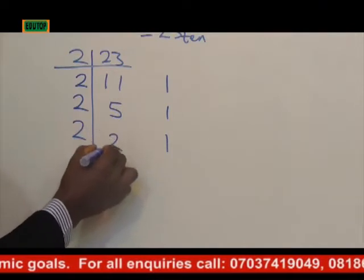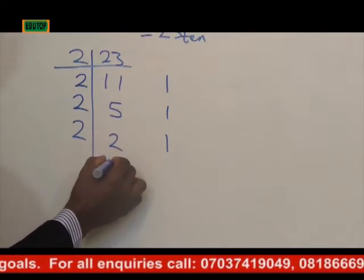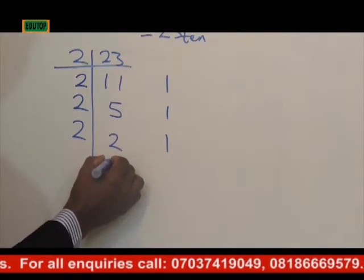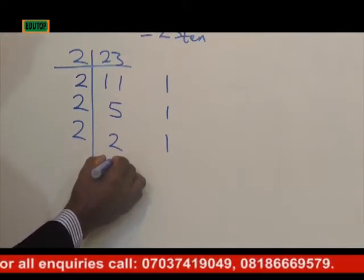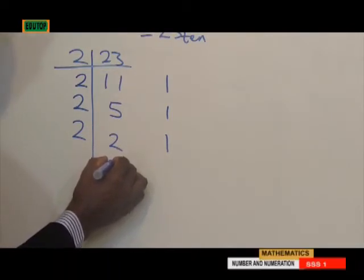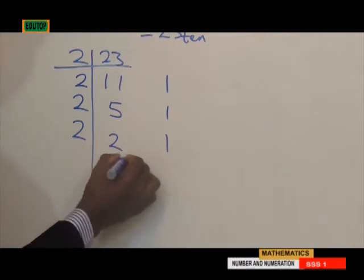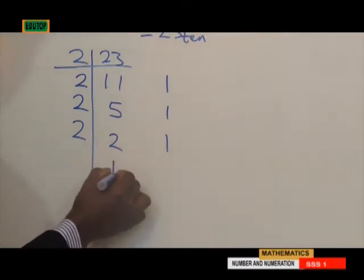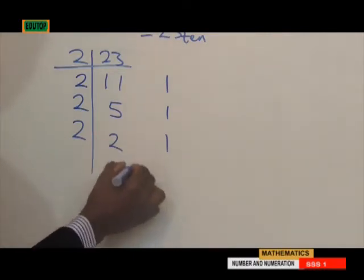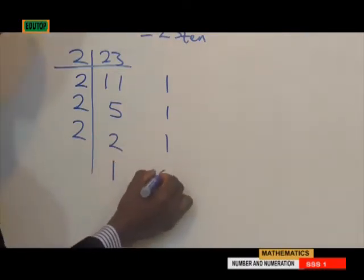2 divided by 2 is 1; 2 times 1 is 2, and 2 minus 2 is 0, remainder 0.